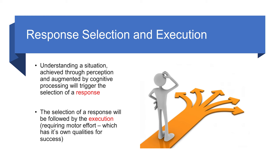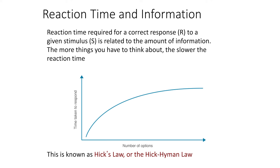The next thing we're going to look at is response selection and execution. Understanding a situation is achieved through perception and augmented by cognitive processing, which triggers the selection of an appropriate response. The selection of a response will be followed by execution, which requires a motor effort — this is another opportunity for error to occur. One thing to consider is that we cannot respond immediately to a stimulus, and the latency between the stimulus and our response is known as reaction time. Reaction time is related to the amount of information we need to process before initiating a response as well as the number of potential responses. Hick's Law indicates that the time and effort required to make a decision increases with the number of options or task complexity.